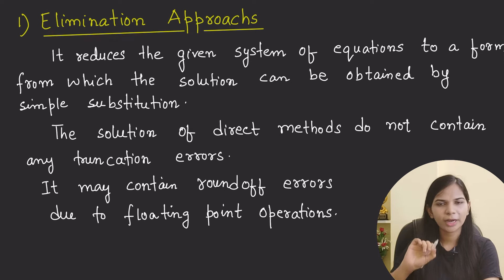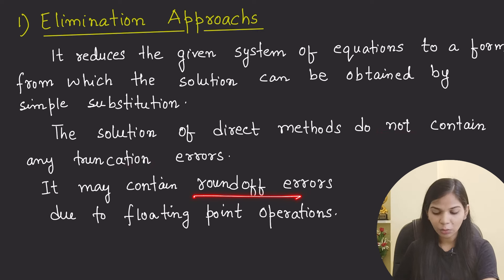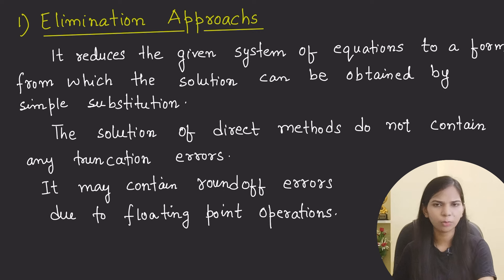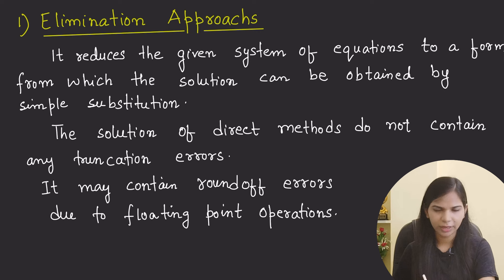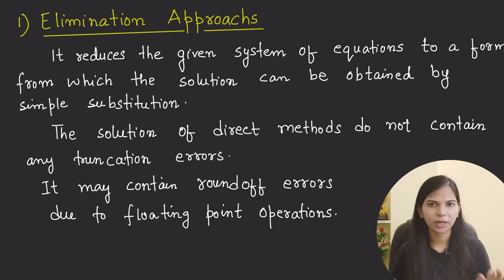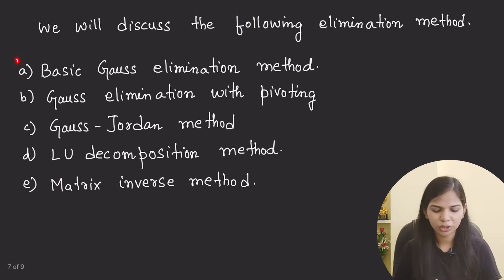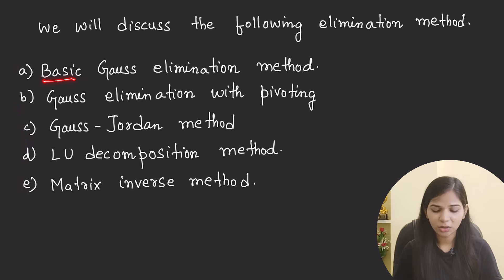The elimination approach has a disadvantage: there is no truncation error, but there is a round-off error due to floating point operations. For example, numbers like 0.2 involve floating point arithmetic. So in the elimination approach, we see round-off error, though our answer does come. The elimination method is still valid.